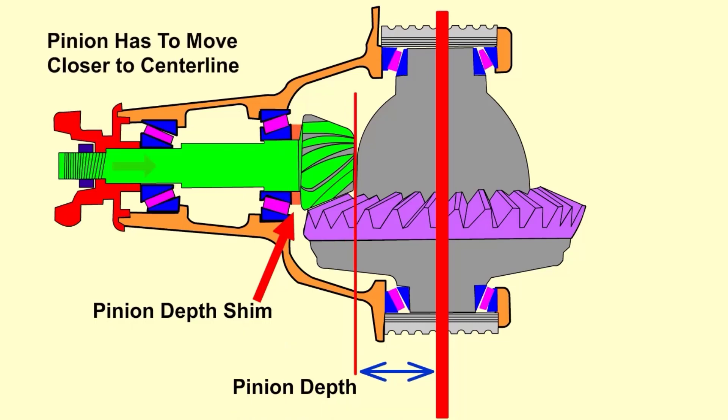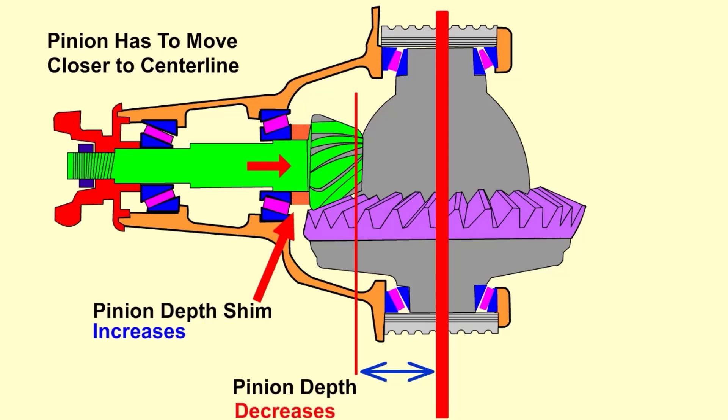To decrease the pinion depth value, the head of the pinion will have to move closer to the centerline of the ring gear. The pinion depth shim will need to increase in size. The distance to the centerline of the ring gear gets smaller or decreases.